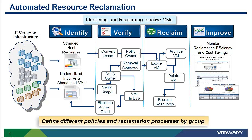Stage 4: Improve. The vCloud Automation Center provides multiple ways to improve efficiency and utilization. Reclamation reporting and cost savings is provided along with the ability to better track and monitor new and existing resources.